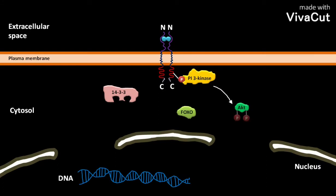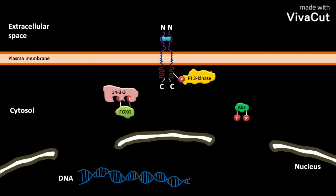The PI3 kinase then phosphorylates and activates AKT. The phosphorylated AKT then phosphorylates the cytosolic transcription factor FOXO. This phosphorylation causes FOXO to bind to the cytosolic chaperone 14-3-3. As a result of this binding, FOXO remains in the cytosol.